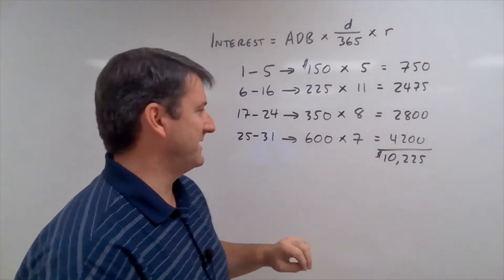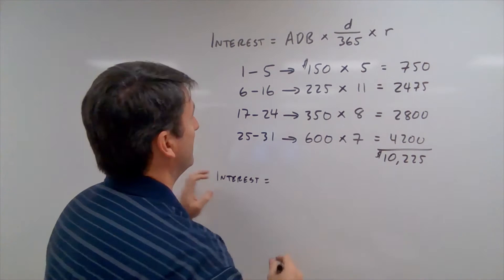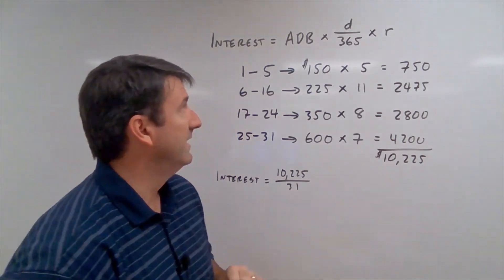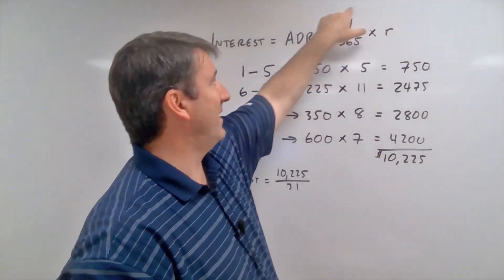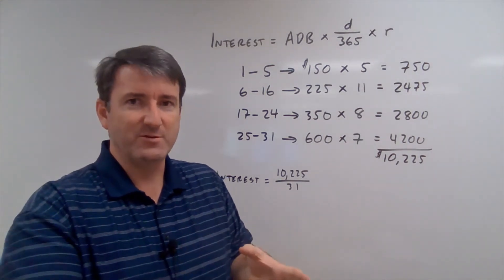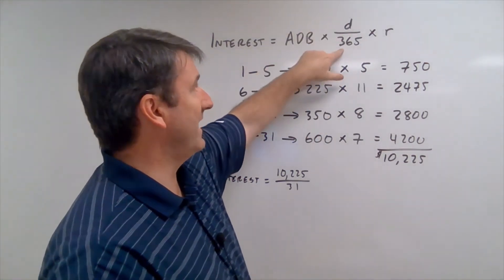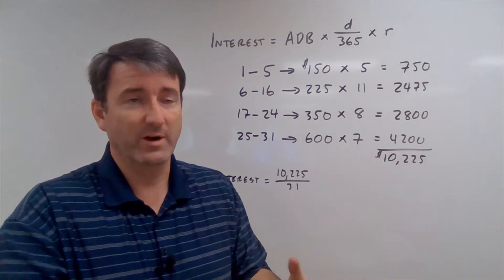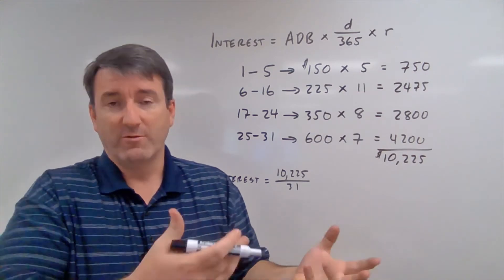But I'm not going to reduce that just yet, and I'll show you why. So the interest is going to be equal to our average daily balance, which is $10,225 divided by 31. And notice what's happening here. We're taking our average daily balance, and we're multiplying it by this portion of our formula which is really just finding the interest rate for the billing cycle. So we're taking 31 days in the month divided by 365. That just tells us what portion of the year is in the billing cycle that we're in. And then we're multiplying that by the annual interest rate. So that gives us the interest rate for just the month of January.